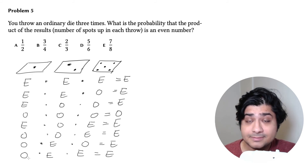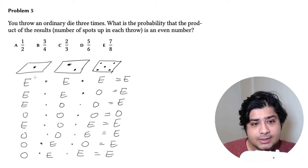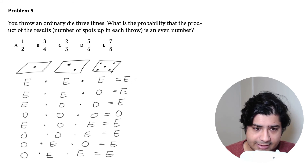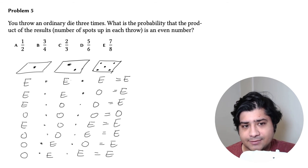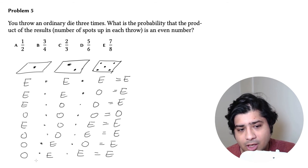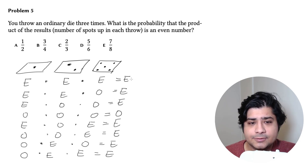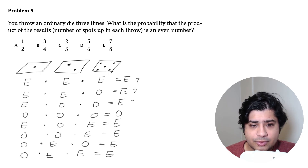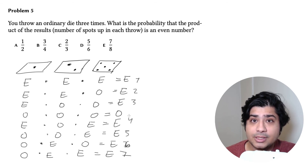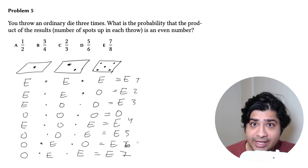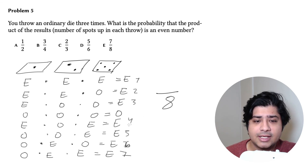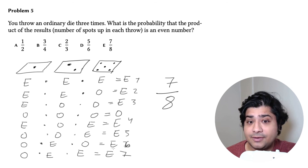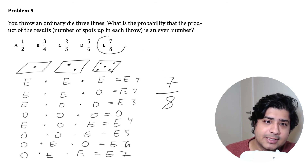Does that cover everything? Yes, it actually does. So we've considered all of the possibilities. Counting them up: one, two, three, four, five, six, seven of them are even, and the last one is odd. So we have a total of eight outcomes, and seven of them are even. The answer is seven out of eight.